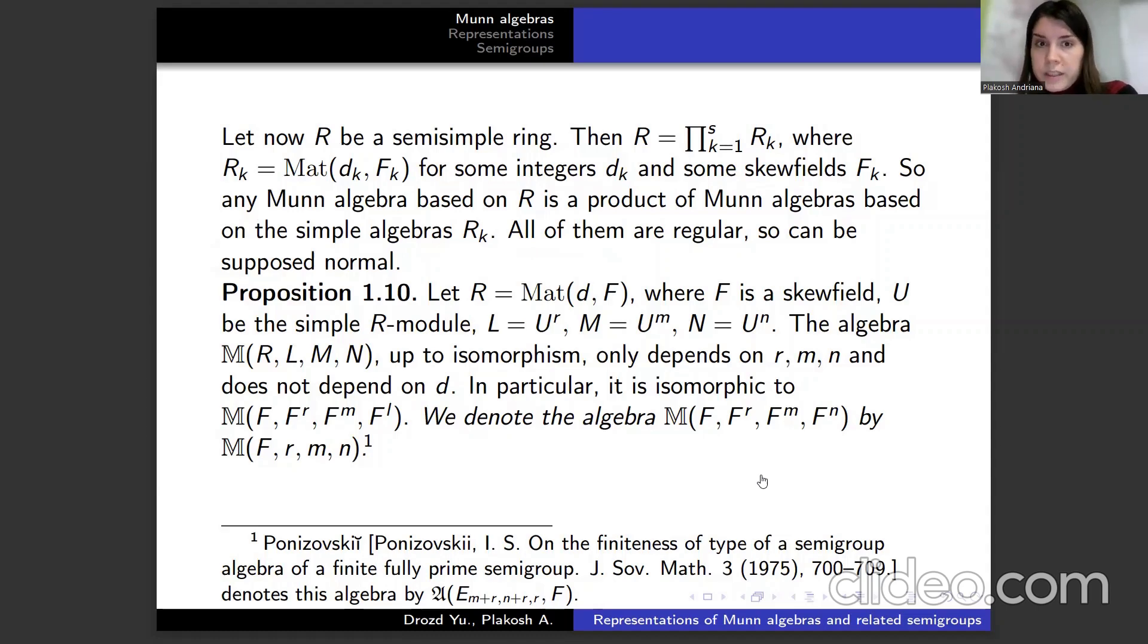Let us formulate a proposition. Let R be matrices, where F is a skew field, U be a simple R-module. L is U^ℓ, M is U^m, N is U^n. The algebra M(ℓ,m,n).